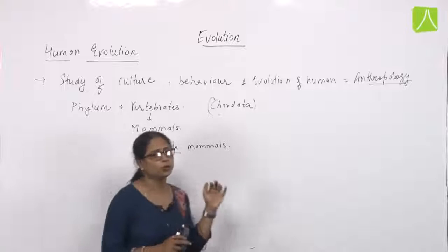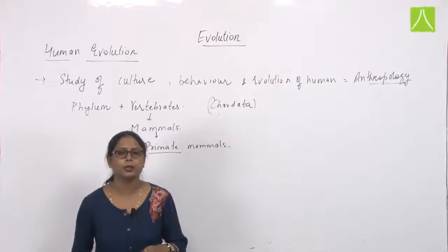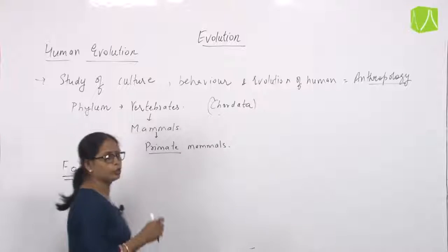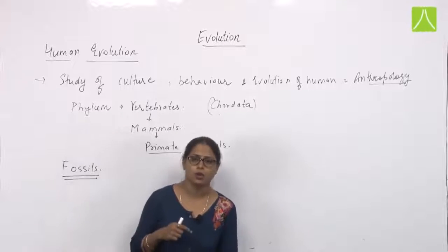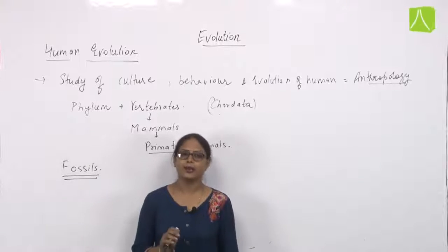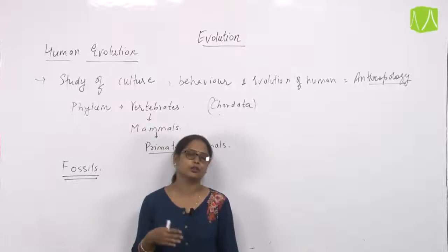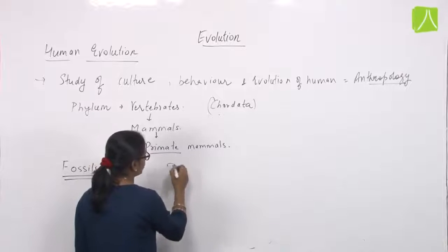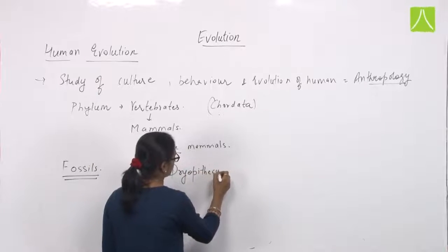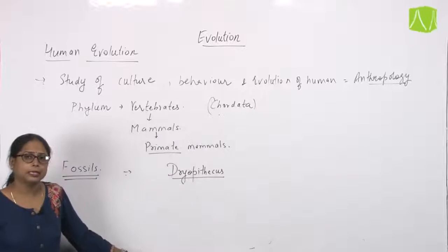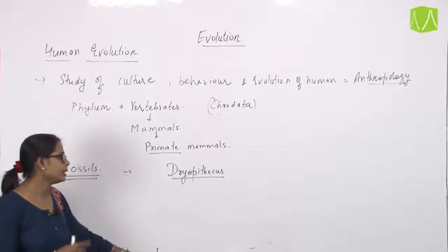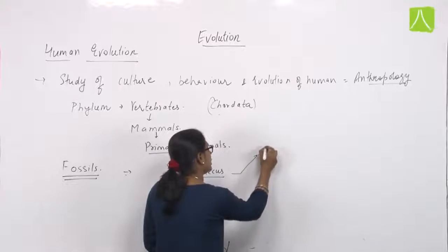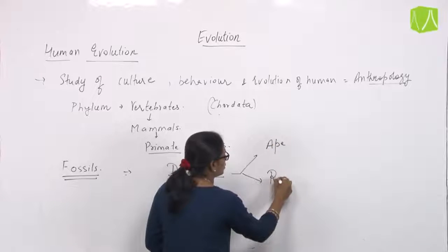The evolution of human beings was very different. If we look at fossil records — bony parts, footprints, and other fossils — they reveal the different stages of human evolution. The most common origin point, our common ancestor, was Dryopithecus. From Dryopithecus, two different species evolved: apes and Ramapithecus.